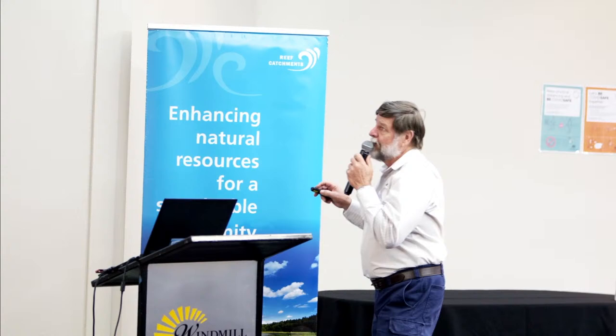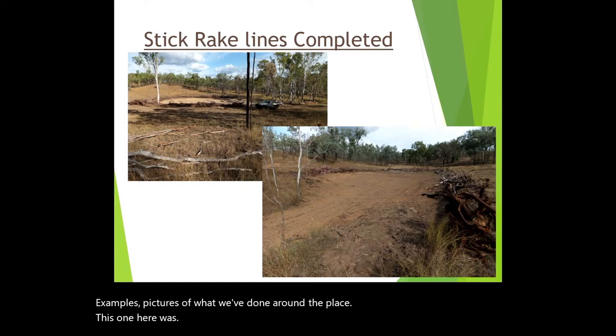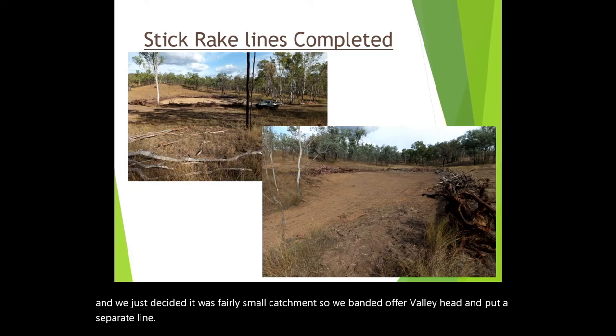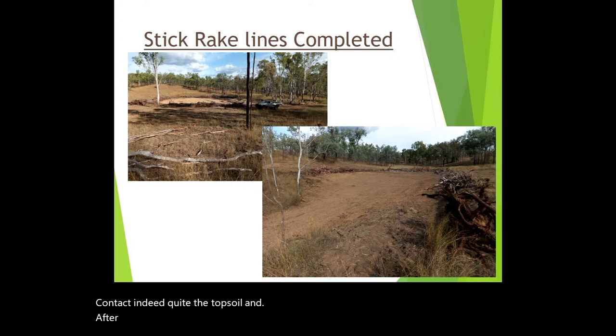For a certain level of storm — you can't build for a 1 in 100 — we tend to design for about a 1 in 50, so you have a fair degree of safety. Going on to some examples: this gully was in a granite soil with a fairly small catchment, so we batted off the gully head and put a stick rake line bank right around the head. Because it was quite a small catchment, that worked very well. The contractors did well with topsoil and after one season it came up quite well.